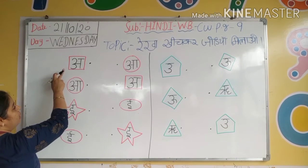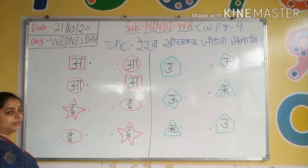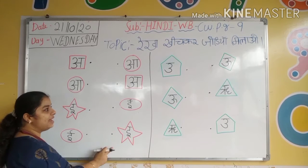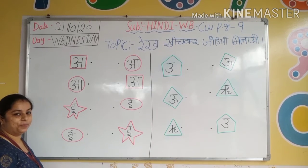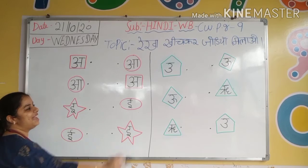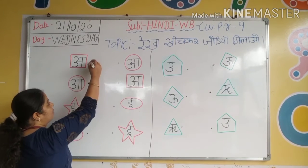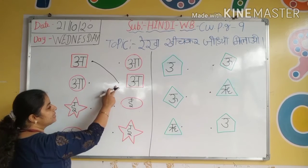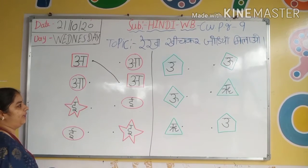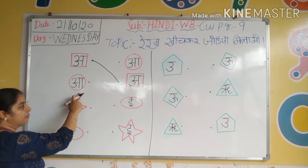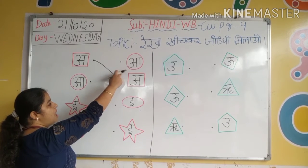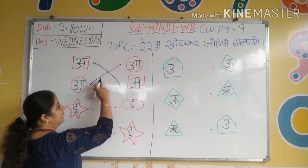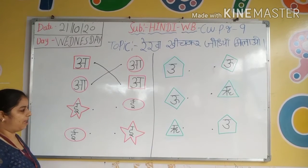So kids, first of all, a se anaar. Tell me, yahaan is line me a se anaar kaha hai? Tell me kids. Yes, a se anaar — toh hume kya karna hai? Jodiya ko milao, rekha khich kar jodiya ko milao. A se aam — kids, a se aam. Hame kya karna hai? Match karna hai. Line khich kar jodiya ko milao.